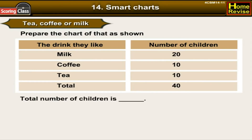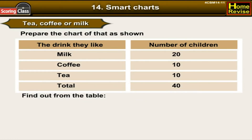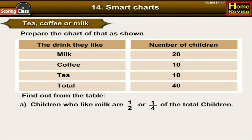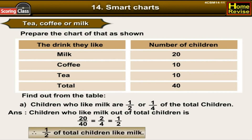From the table, the total number of children is 40. Children who like milk as a fraction of the total: 20/40 = 2/4 = 1/2. Therefore, half of the total children like milk.